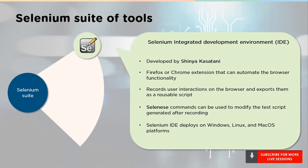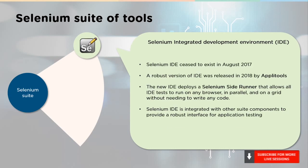Any deviation in the result indicates the presence of a bug. The script generated can be modified using Selenium commands like actions, accessors, and even assertions. Selenium IDE can be deployed on different platforms like Mac OS, Linux, and even Windows. IDE ceased to exist back in 2017 when Firefox released its Firefox 55 version. A robust and revamped version was released by ApplyTools in 2018.